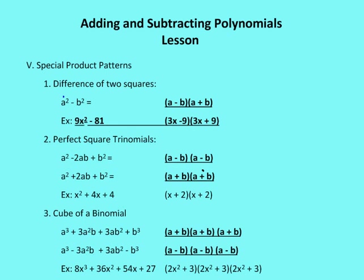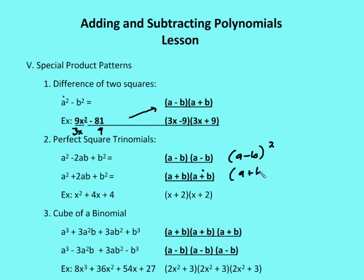We need to remember special product patterns. The difference of two squares: a squared minus b squared factors to a minus b times a plus b. For example, 9x squared minus 81 factors to 3x minus 9 times 3x plus 9, where a is 3x and b is 9. Also, the perfect square trinomial: a squared minus 2ab plus b squared equals a minus b squared, and a squared plus 2ab plus b squared equals a plus b squared. For example, x squared plus 4x plus 4 factors to x plus 2 times x plus 2.